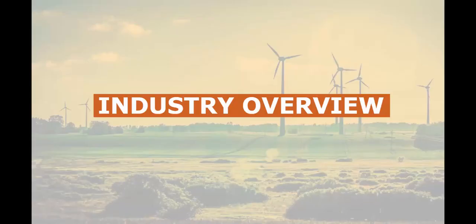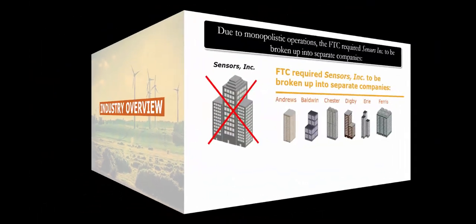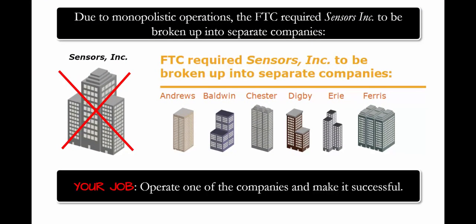Let's dive a little deeper into the industry overview for the simulation. Originally, there was a single corporation named Sensors Inc., which sold sensors as its main product. The corporation was shut down by the FTC, the Federal Trade Commission, due to monopolistic operations, and it was broken up into six separate companies: Andrews, Baldwin, Chester, Digby, Erie, and Ferris.